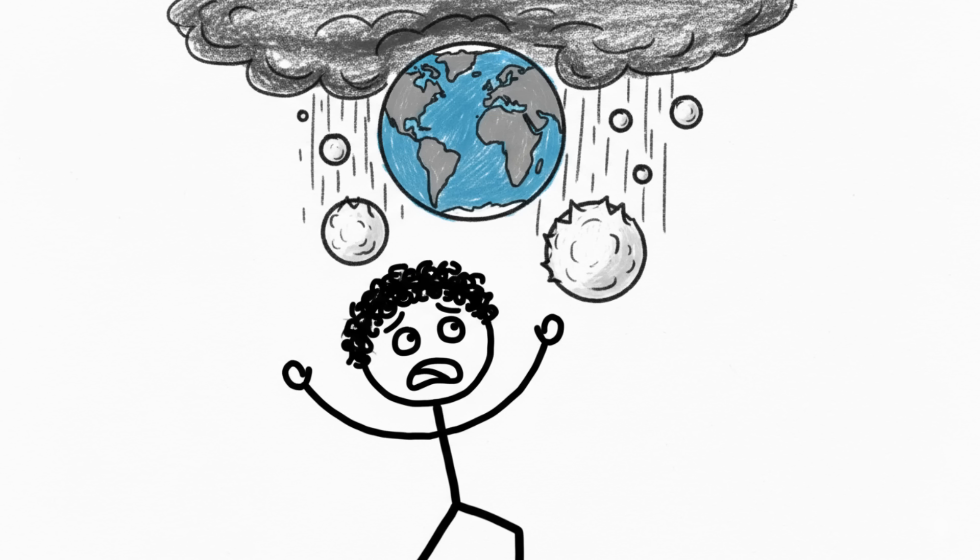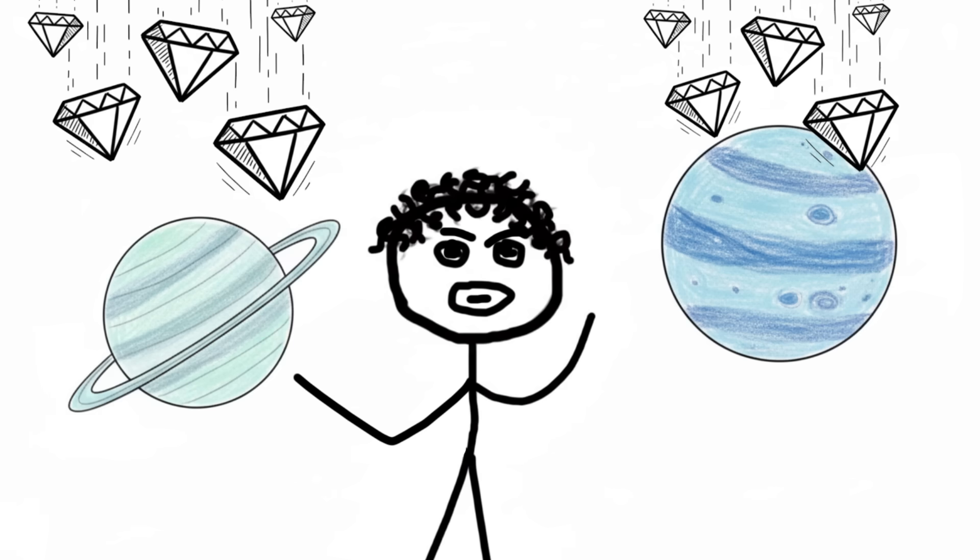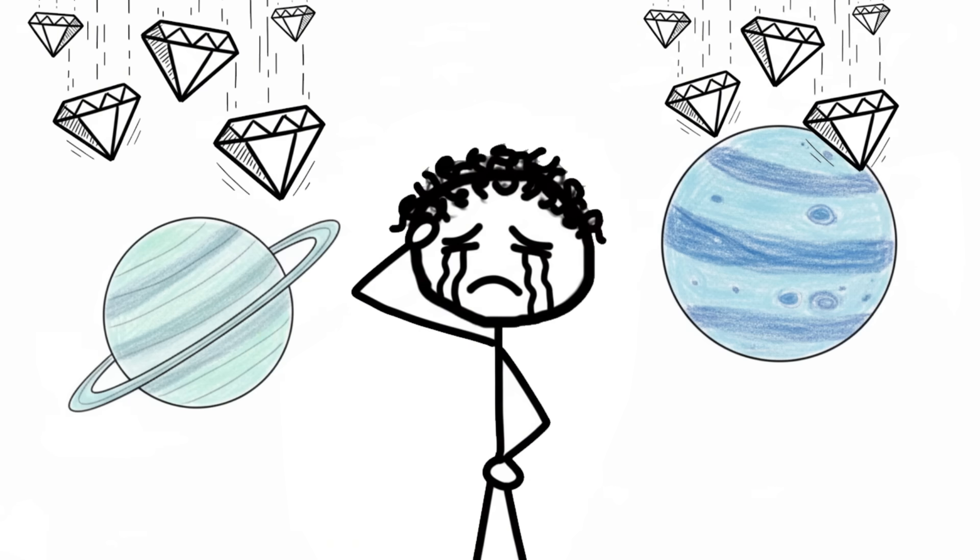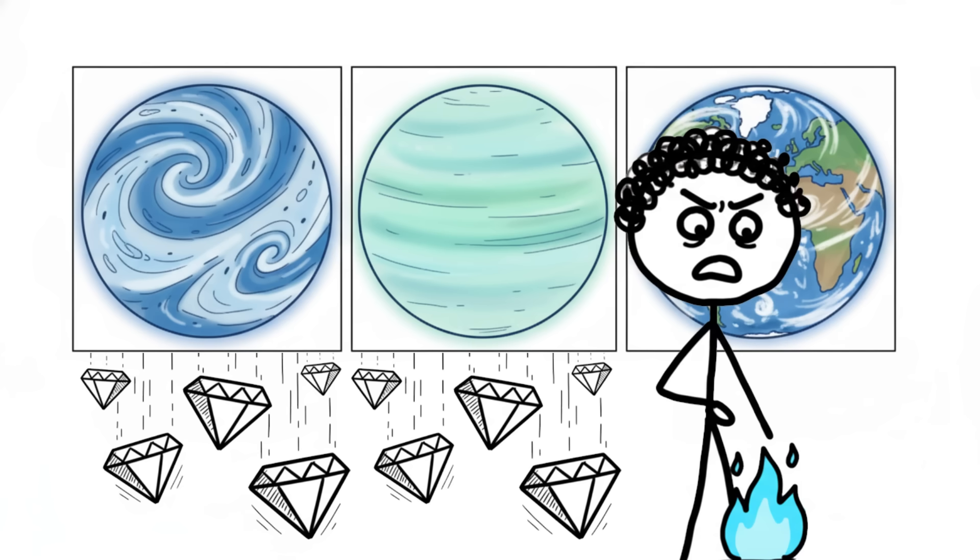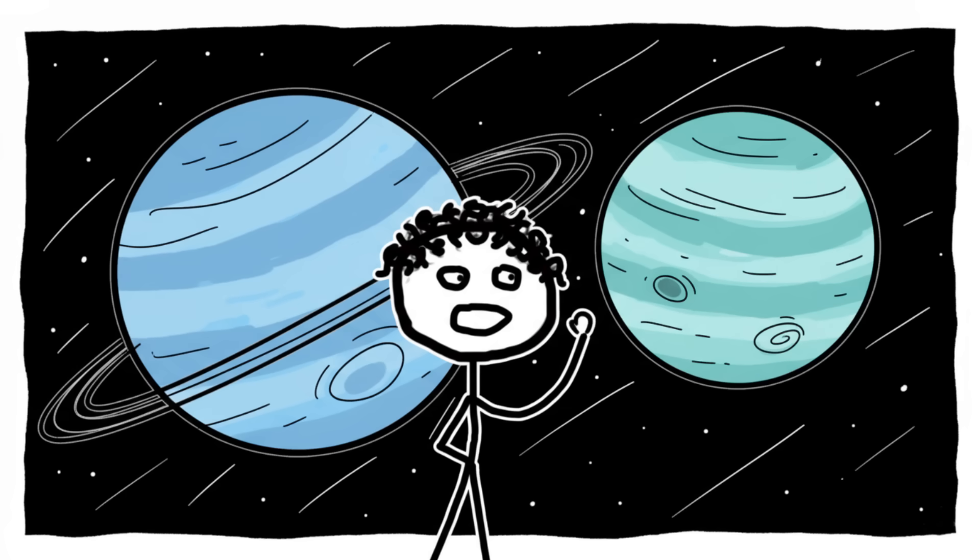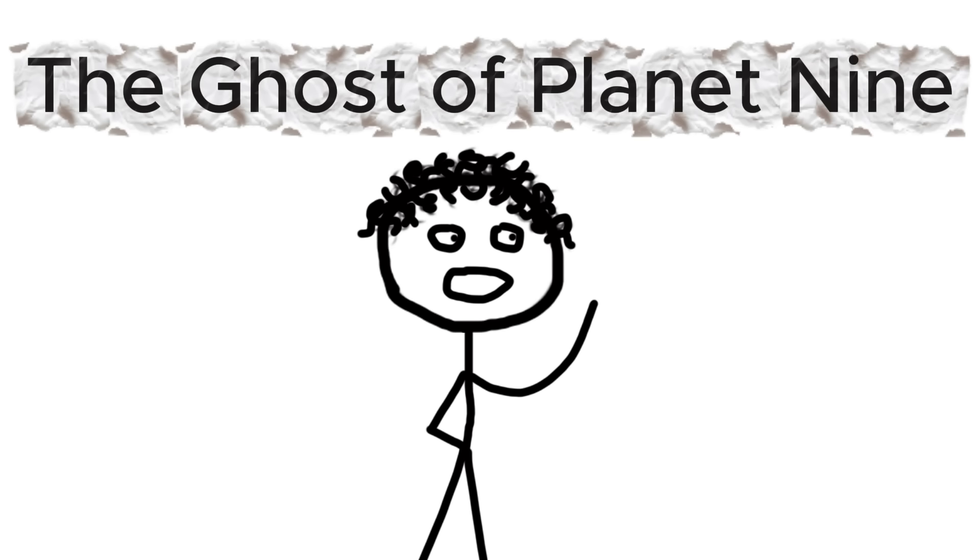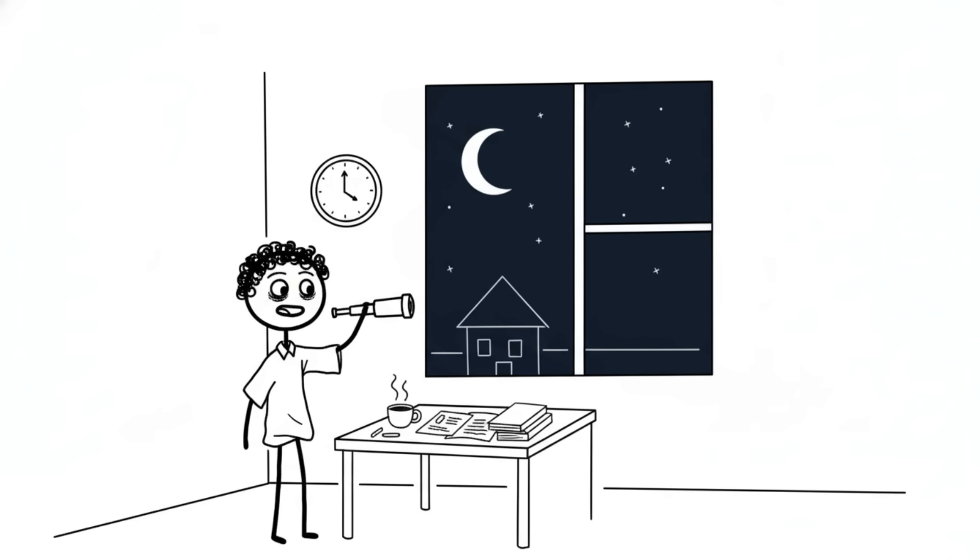So while you're worrying about a little hail on Earth, those distant worlds are being pummeled by a literal shower of gemstones. The universe is casually generating wealth on a scale that makes the world's diamond cartels weep, and it's doing it with gas that on Earth we usually just burn or complain about. Basically, Neptune is the ultimate flex for the solar system.